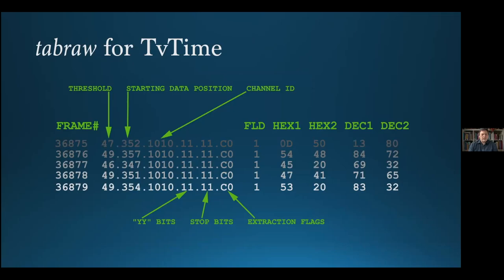The only practical differences in the Tab Raw files for TV Time are seen in the reserve column. While we start with the usual threshold and starting data position fields, the remainder are populated with data extracted from the TV Time signal: channel ID, YY bits, and stop bits. Since multiplexing in the system was performed by way of the channel ID — as opposed to dedicated control codes used in the 1980 system — the channel ID is the most crucial piece of data. Without it, there's no way of knowing what is or isn't caption data.